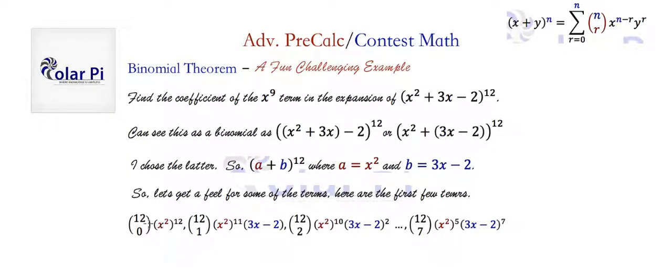All right. But let's have a closer look starting back at the first term of this guy. Where again, a and b are these guys. Now here we see that a to the 12th is going to have us write x to the 24th once we simplify. But that's too much, right? We're looking for coefficients of x to the 9th.